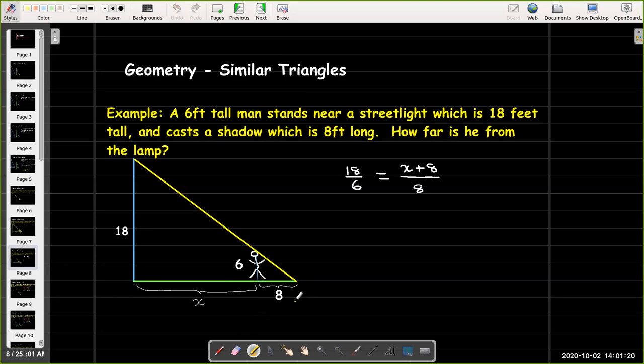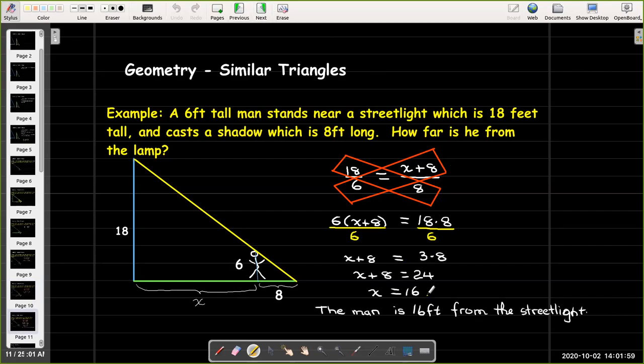And sure enough if I think of the man here his height is 6 the corresponding height would be the height of the street light which is 18. The base of the big triangle would have length of x plus 8 and the base of the small triangle would just be 8. So I can go ahead and solve this. I think the simplest way is to form the cross products here, set them equal to each other. I went ahead and divided each side by 6 and worked it out to find that he is 16 feet from the street light.